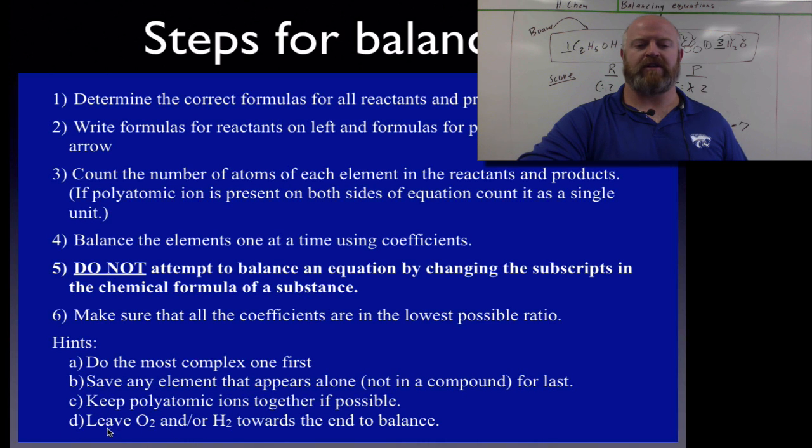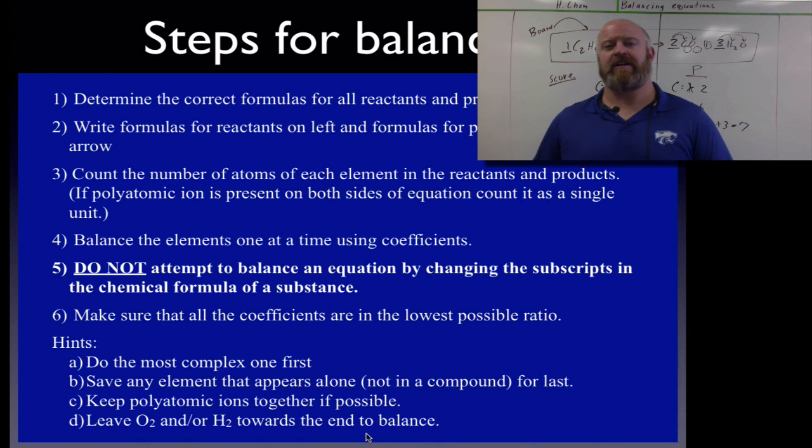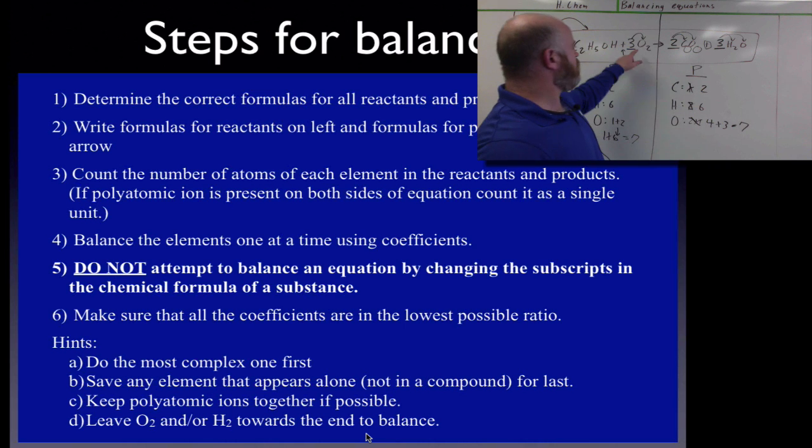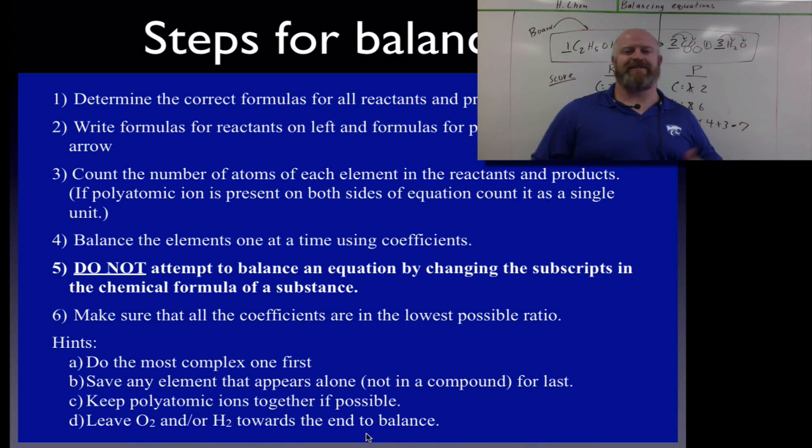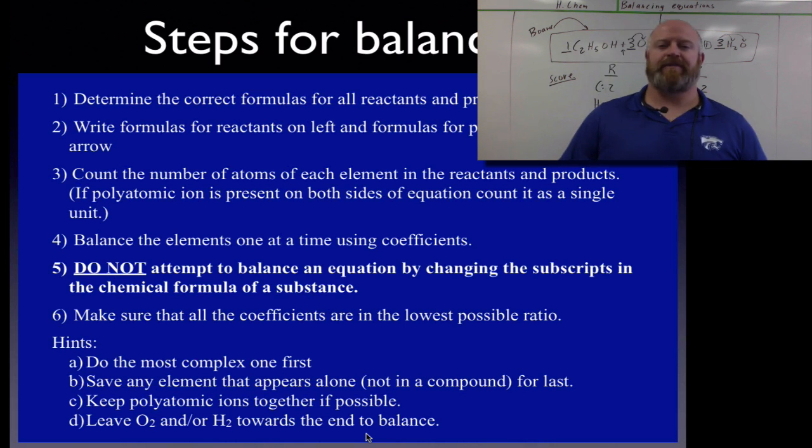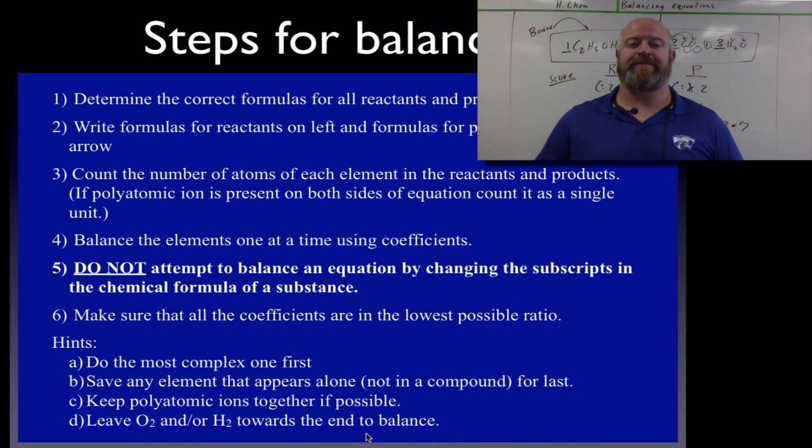And then another tip or trick, leave O2 and H2 way to the end to balance those. A lot of chemistry has a lot of oxygen in it and a lot of hydrogen in it. So if you have O2 or H2 in your equation as diatomics, leave them to the end to balance. Because typically if you balance the other things first, it makes balancing it easier. So those are the steps. It's not that hard to play the game. You just need some practice with it now.